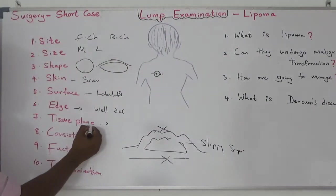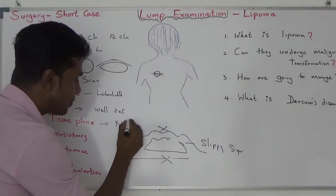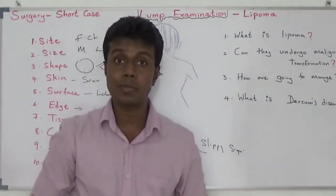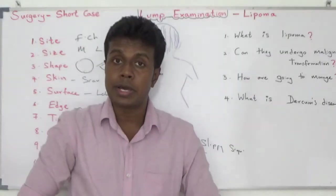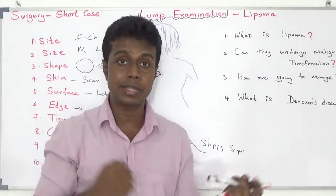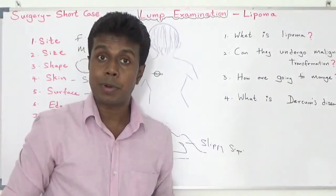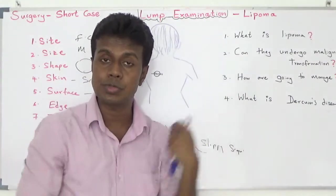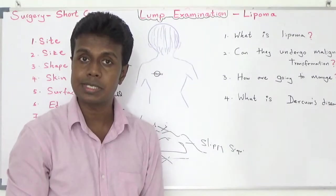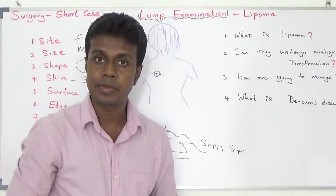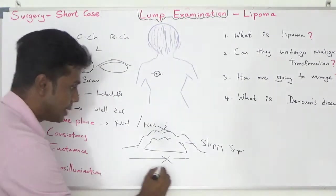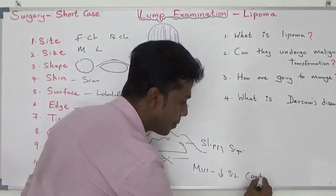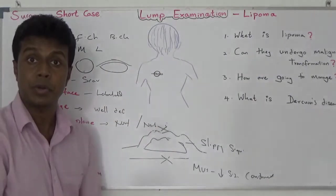The slipping sign: tissue plane is not attached to the skin and not attached to the underlying structure. However, sometimes lipoma can attach to your muscles. Those lipomas reduce in size once you contract the muscles. For example, a lipoma on top of the bicep — once you contract the bicep, the lipoma reduces in size; once you relax, it returns to normal size. So: lipoma attached to muscles will reduce in size on muscle contraction.